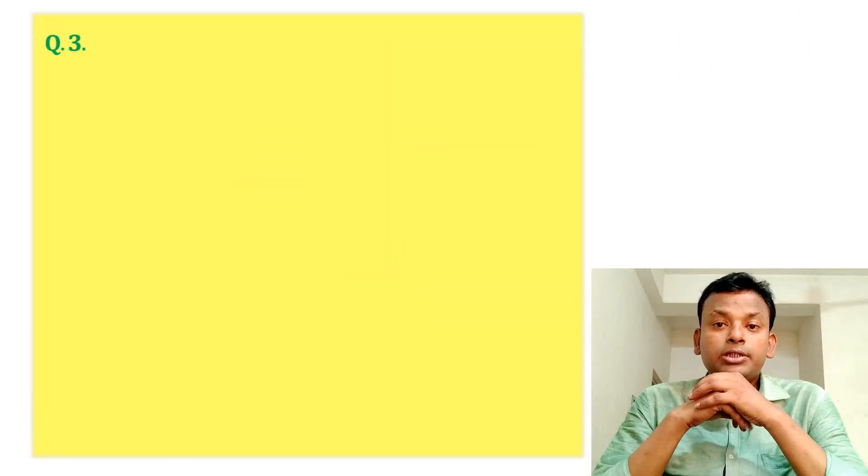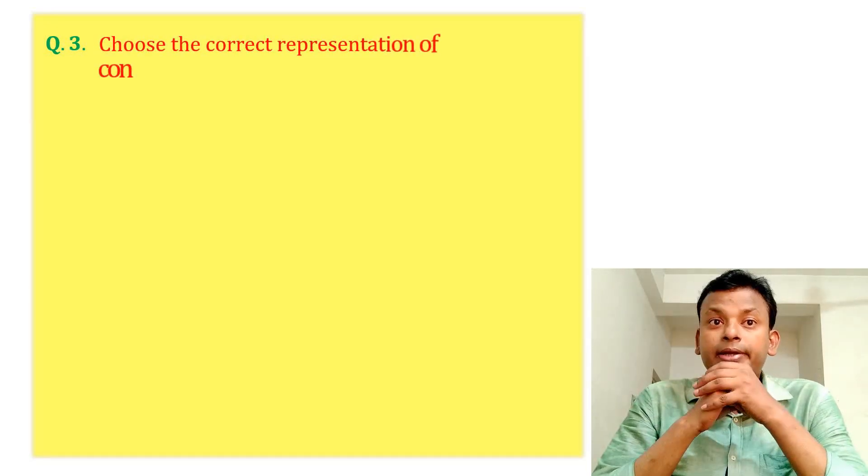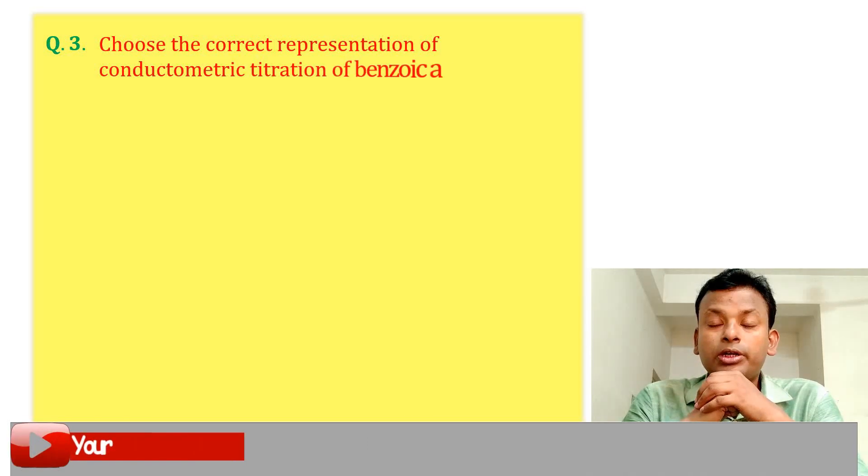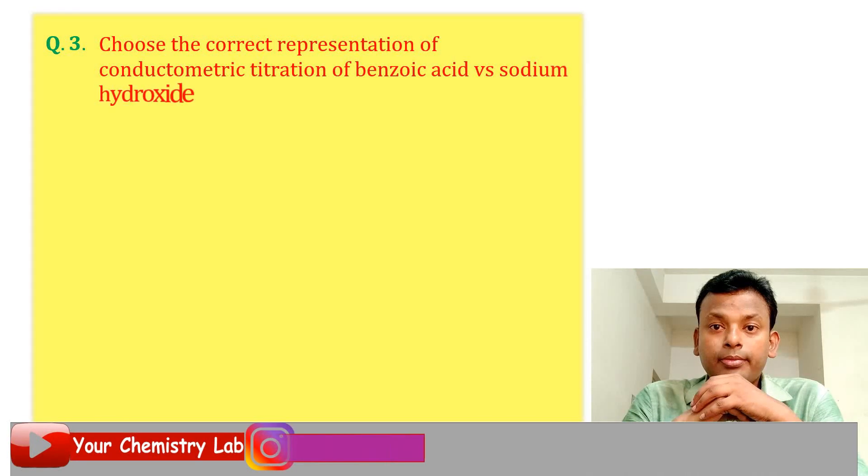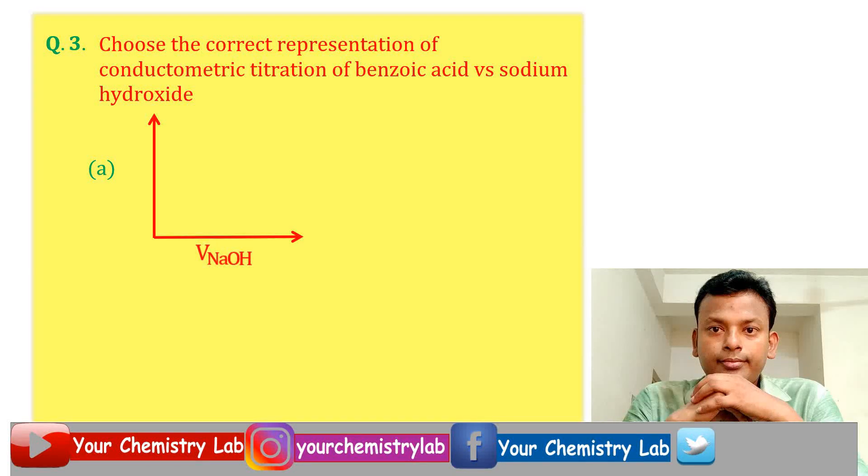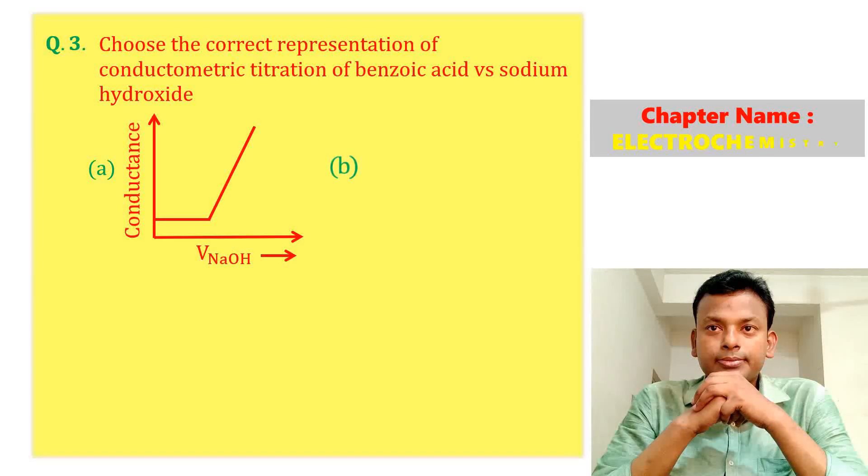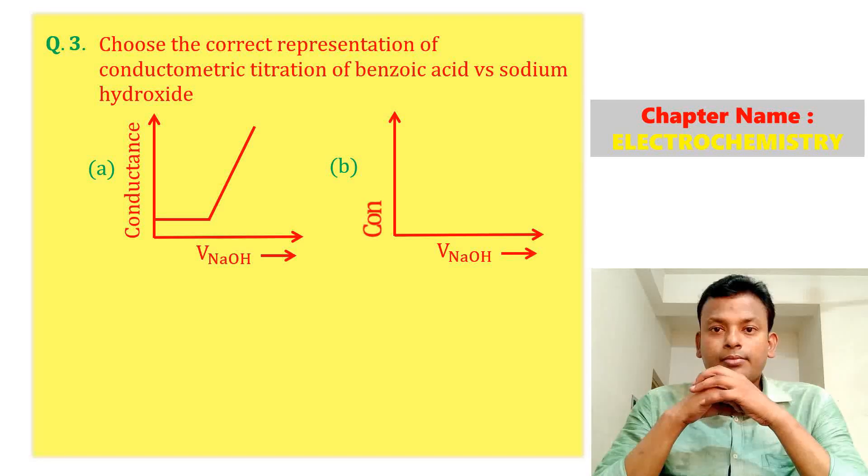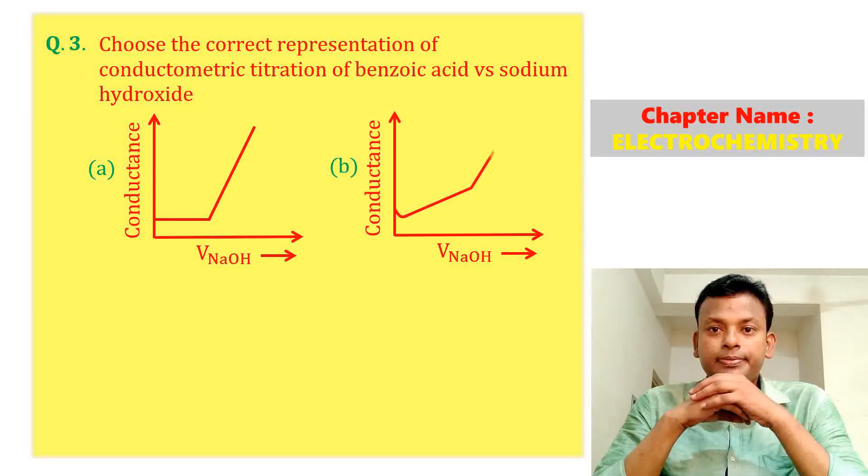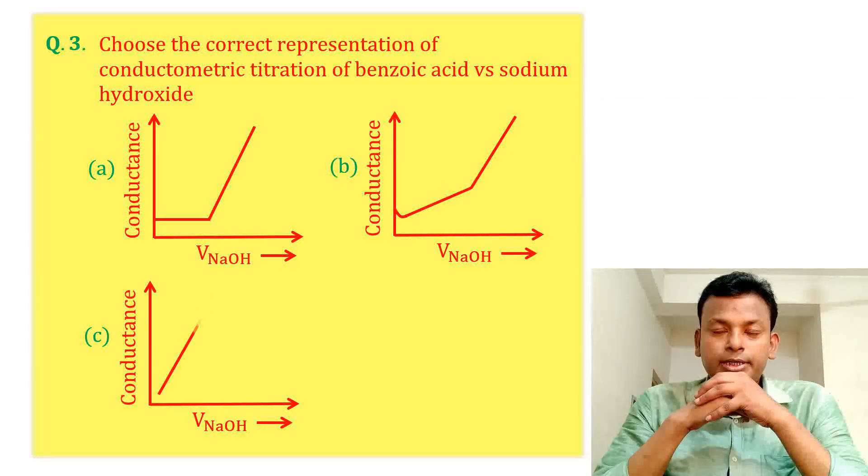Question three: Choose the correct representation of conductometric titration of benzoic acid and sodium hydroxide. Option A, option B, option C, option D.